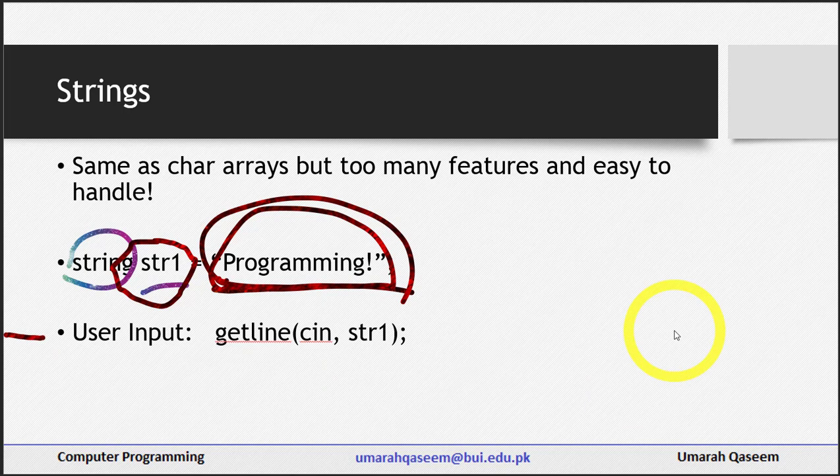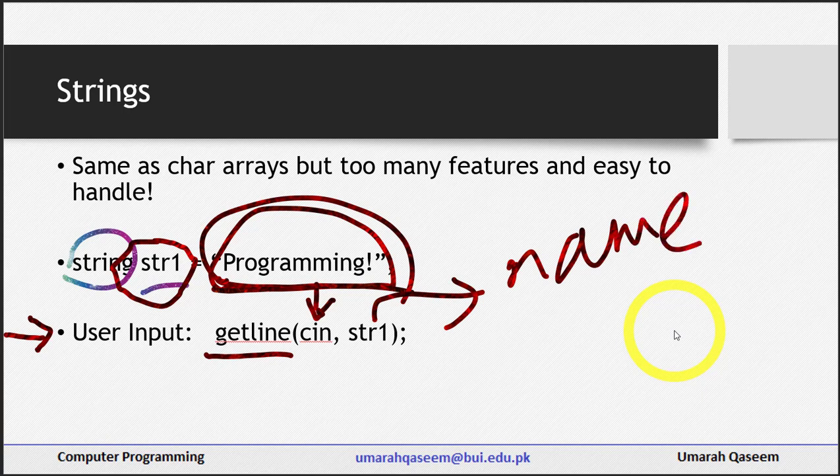Now the second thing is user input. Let's see how we do that. For that, we have a function named getline. It has two parameters. First parameter is cin, and the second parameter is the name of your array, sorry, not the array, the name of your string.